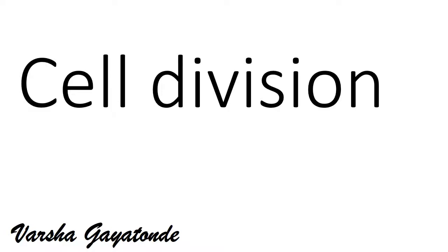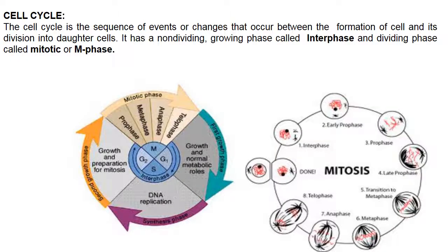Welcome to the agriculture video series. This video is on cell division. The cell cycle is a sequence of events or changes that occur between the formation of a cell and its division into daughter cells. It has a non-dividing growing phase called interphase and a dividing phase called the mitotic or M phase. Here you can clearly see 75% of the area is contributed to interphase and only 25% to the M phase, meaning the majority of functions are completed by a cell in interphase rather than M phase.